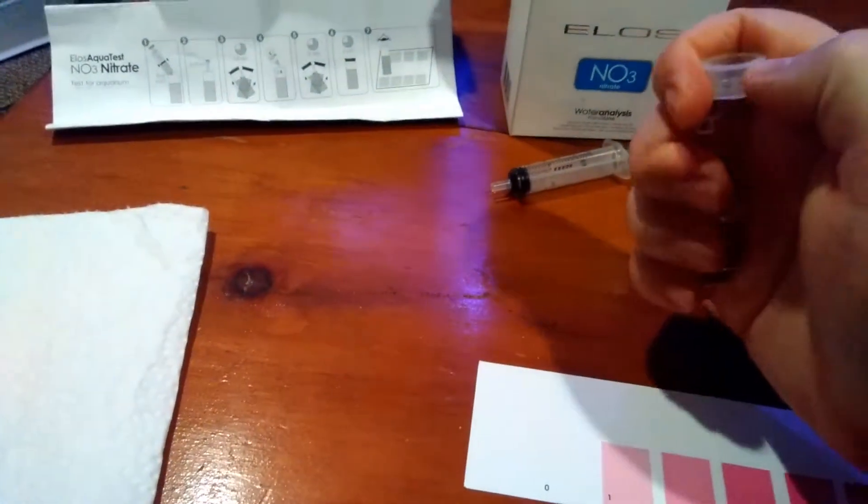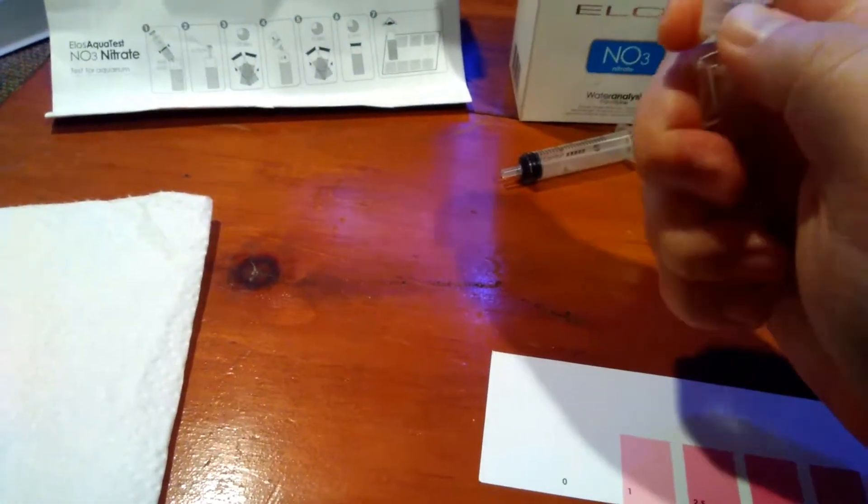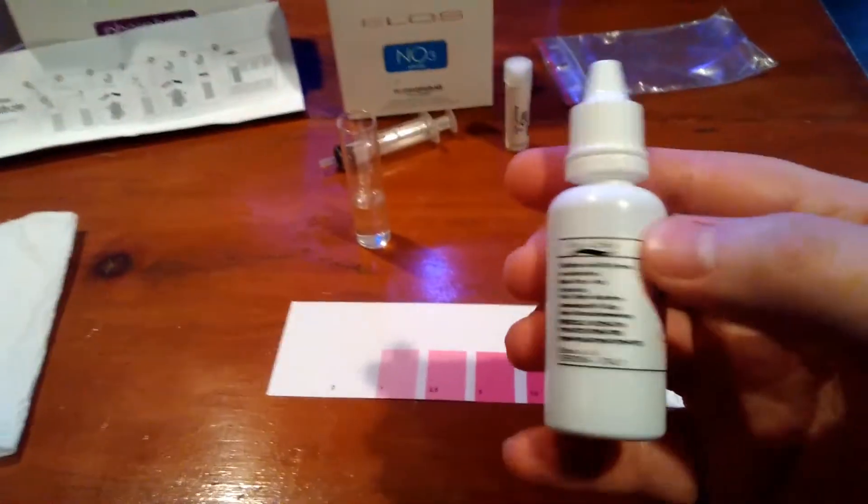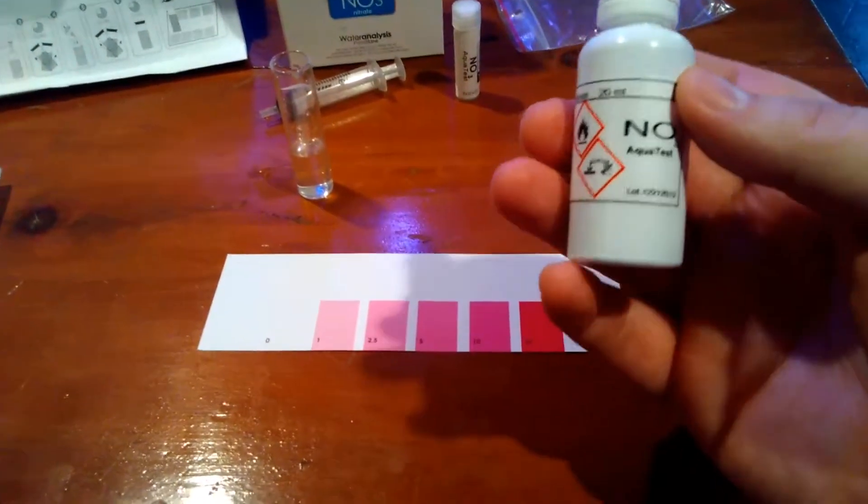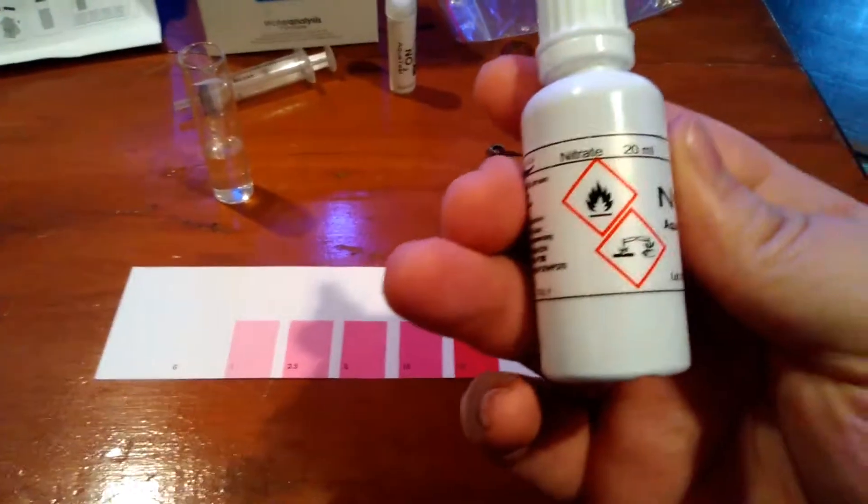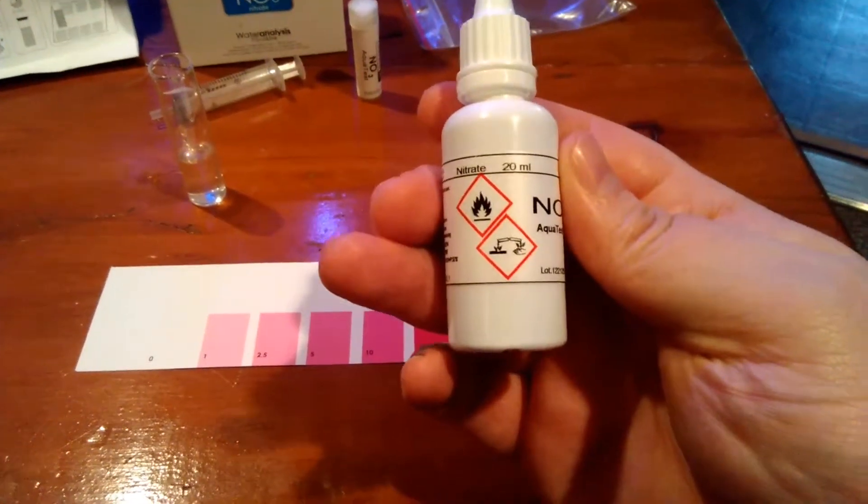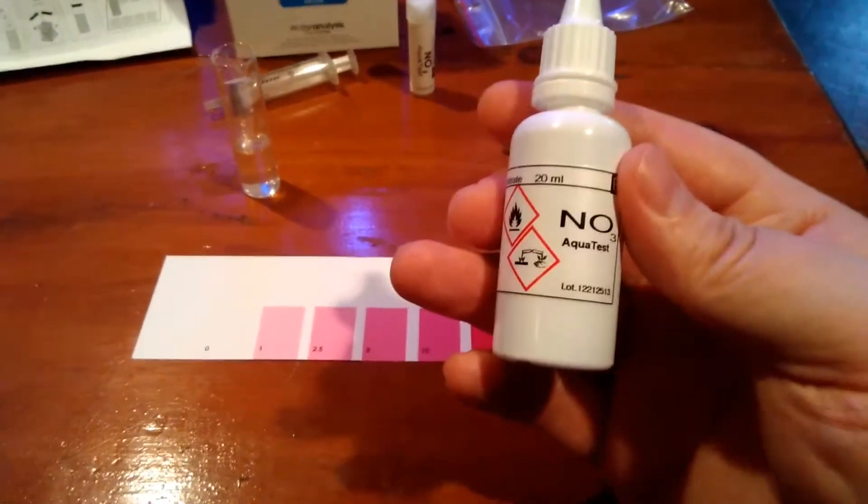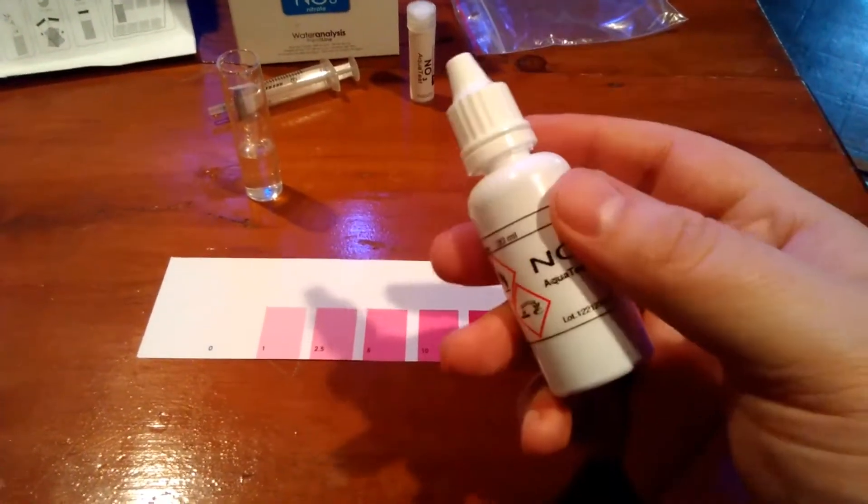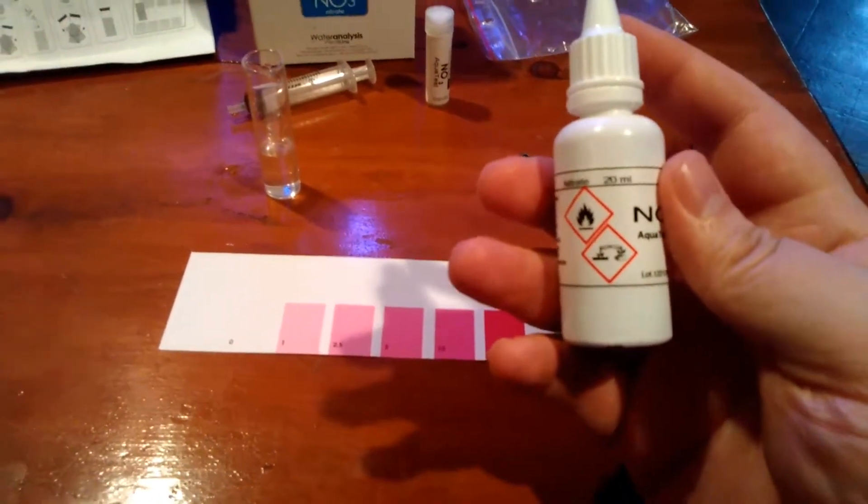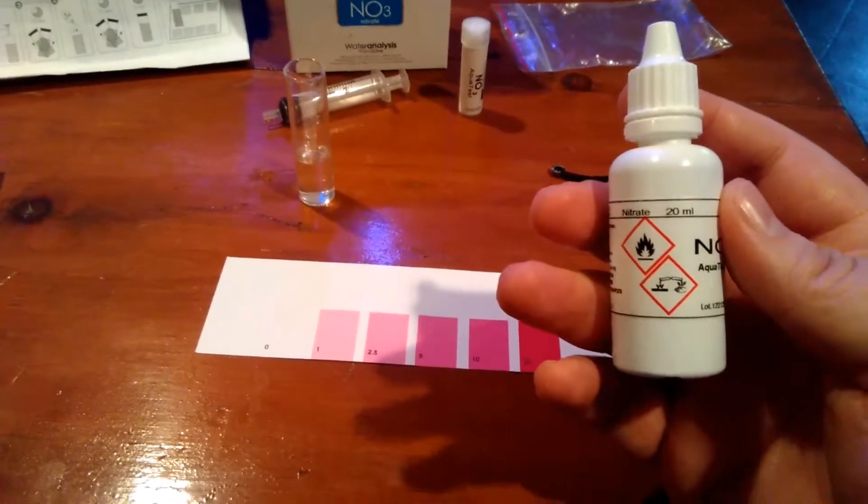Alright, pop the top off on that. This is the liquid reagent. Now if you notice, there is a flammable and an acidic symbol on there. So what they want you to do is once you uncap this and put your 6 drops in, put the cap right back on because this does have a smell that's not really too great. But I'll tell you what, does it really matter?